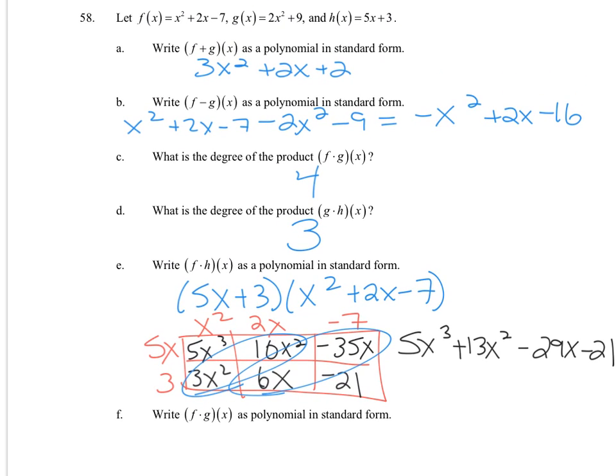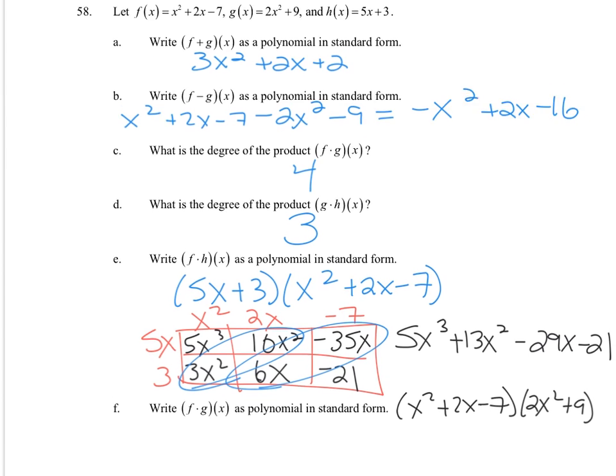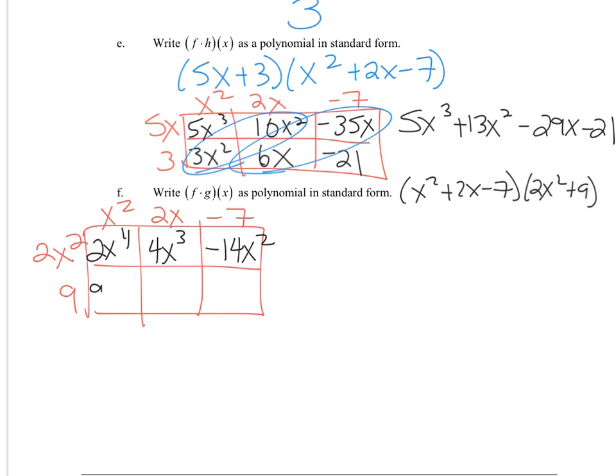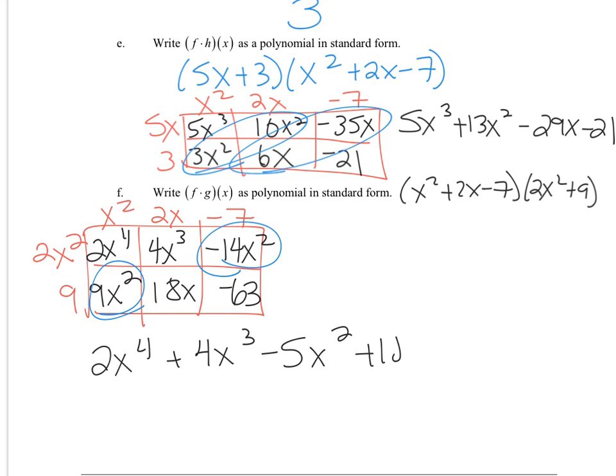Now we have to do f and g. I'll do box again. It doesn't matter if you did the trinomial as the vertical or horizontal piece, it's a personal preference. Combining my like terms, we've got 2x⁴ + 4x³ minus, so here we got my x² terms, 5x² + 18x - 63.